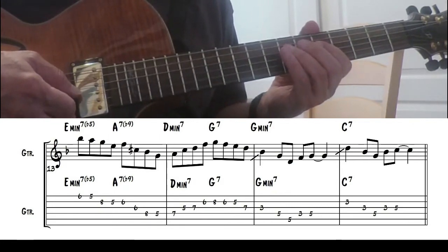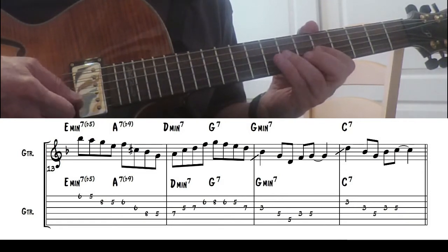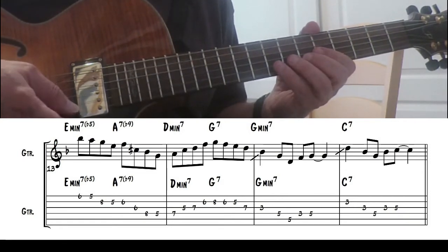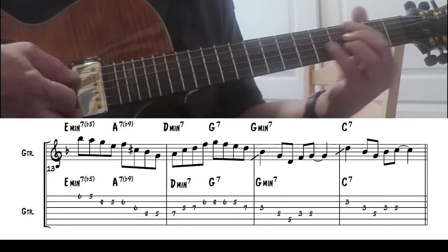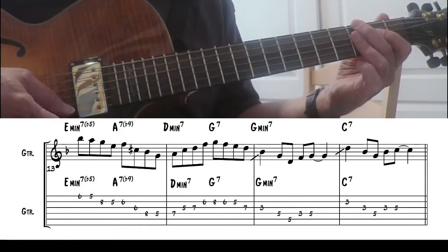Then just a D Dorian. Actually, that's all chord tones there. Like G Mixolydian, so we're basically a 2-5 in C. But then we don't go to C, we go to the 2-5 in F.